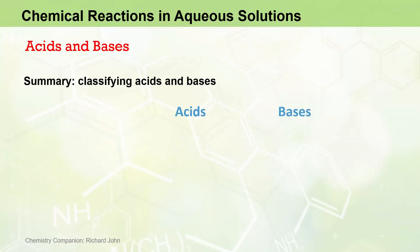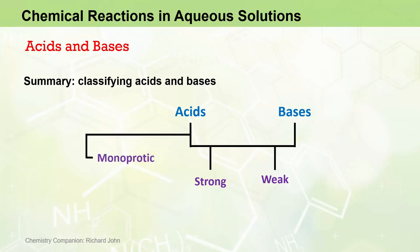So in summary, both acids and bases can be classified as strong or weak, with strong acids and bases tending to be inorganic in nature, while weak acids and bases tend to be organic in nature, although not exclusively. In addition, acids can be further classified according to the number of H-plus ions they yield per acid molecule, specifically being monoprotic, diprotic, or triprotic acids.